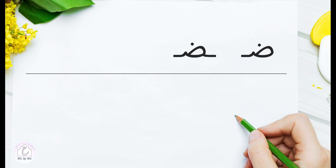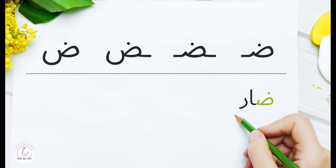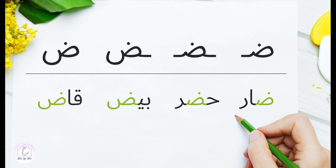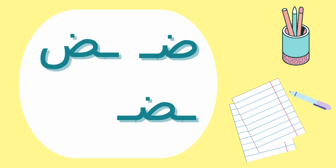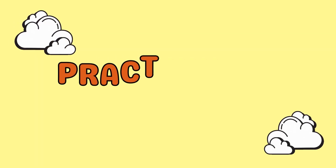In conclusion, Ḍād has four forms depending on its position in a word and whether it's preceded by a non-connecting letter or not: the initial position, the medial, the final, and the isolated form. Please practice writing the four forms. You will find a writing sheet to help you with your practice on the link in the description box below. And remember to pronounce the sound of Ḍād as you draw it — Ḍ, Ḍ, Ḍ. Thank you.